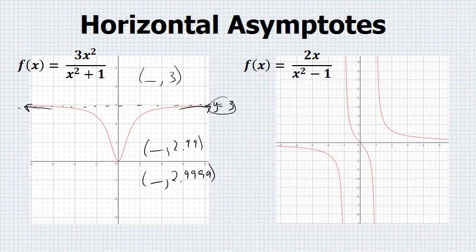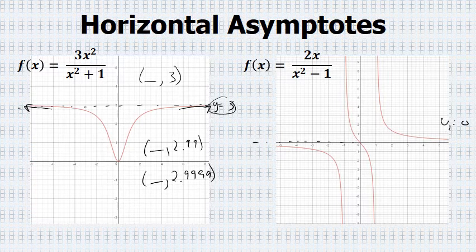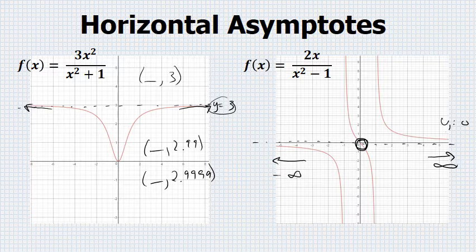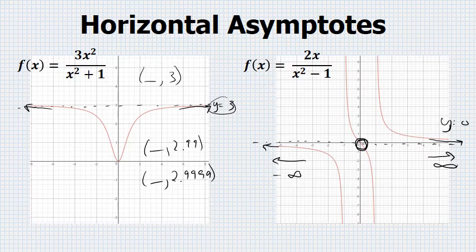Here's an example of a function that has a horizontal asymptote at y = 0. Notice that unlike vertical asymptotes, the function can actually cross through the horizontal asymptote, but as the graph goes to infinity and negative infinity, the function will get closer and closer to the asymptote — which in this case is y = 0 — but never touch it.